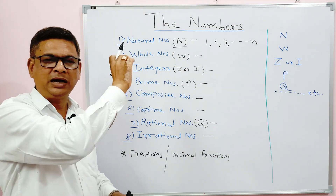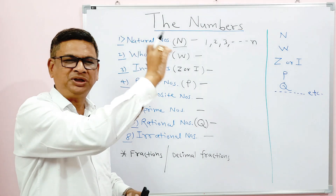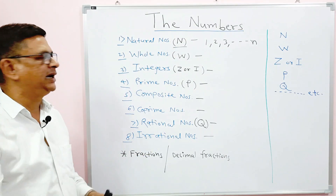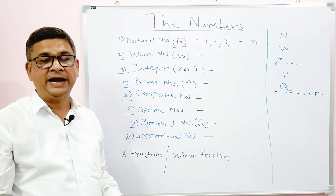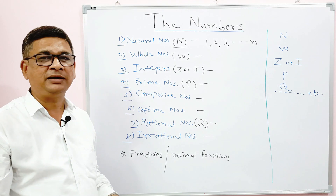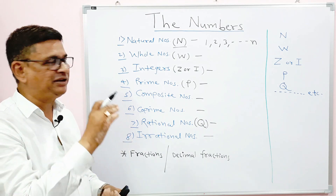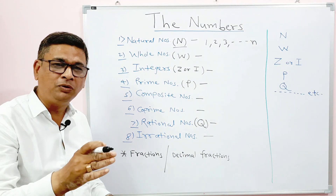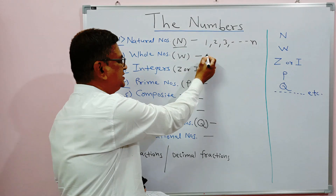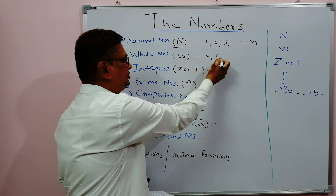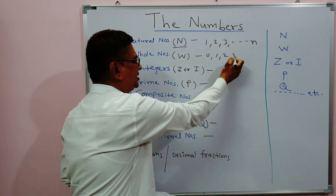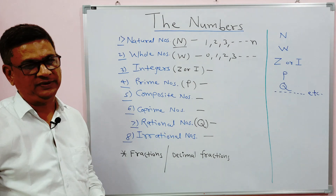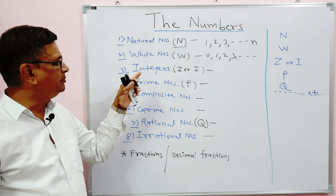The second type is whole numbers. Whole numbers are nothing but natural numbers plus zero. So we have numbers like 0, 1, 2, 3, and so on. Whole numbers means natural numbers with only zero added extra.